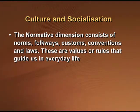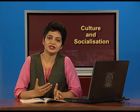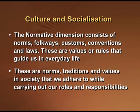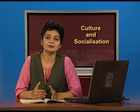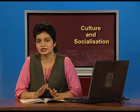The other aspect is the normative aspect. The normative dimension consists of norms, folkways, customs, conventions, and laws — the values or rules that guide us in everyday life and provide the broad framework directing how to behave generally. This framework can be further divided into two parts. The first is non-written rules: these are the norms, traditions, and values in society that we adhere to while carrying out our roles and responsibilities, and we learn them through the process of socialization. For example, how we celebrate Diwali, taking blessings of elders in our family, or greeting elders when we meet them. These forms of behavior are not written anywhere; they are like rules or laws, but we follow them traditionally.